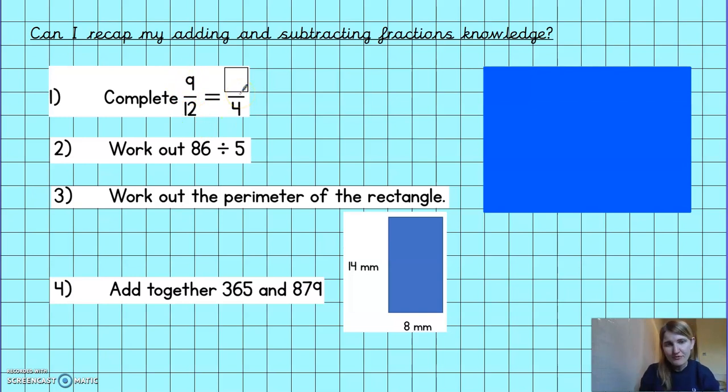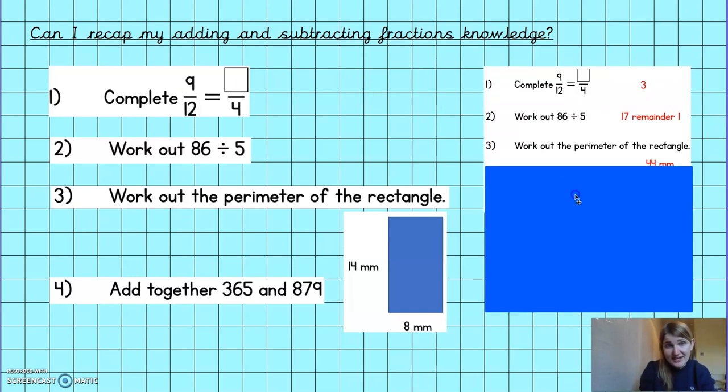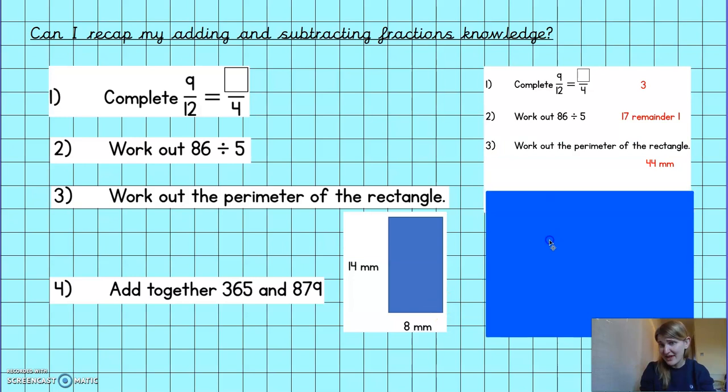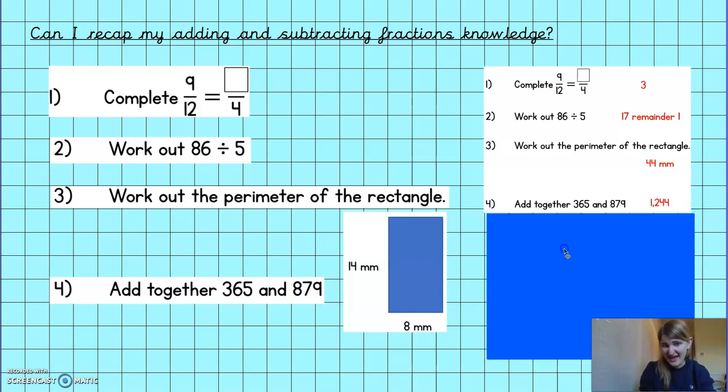Have a go, pause me, and then I'll reveal the answers. Right, so number one, hopefully you divide it by three to turn it into three quarters. With 86 divided by 5, 17 remainder one. Hopefully you went, oh, well, it doesn't end in a five or a zero. Therefore, I know there's going to be a remainder. Perimeter is the distance around the outside, which would have been 44 millimetres in total. And then the addition there, I would have probably done it in a column method myself, but however works best for you.